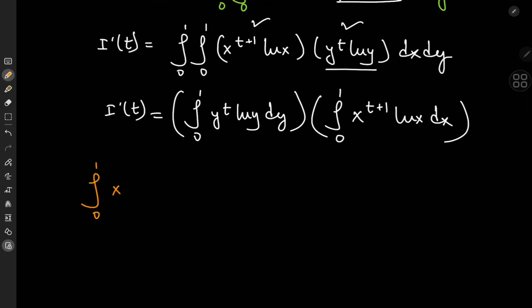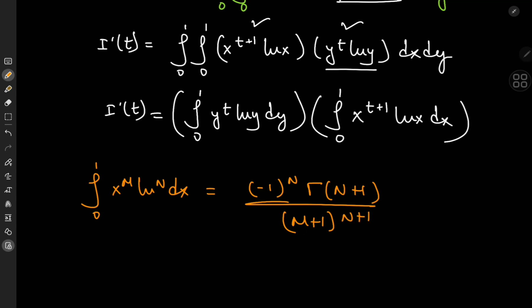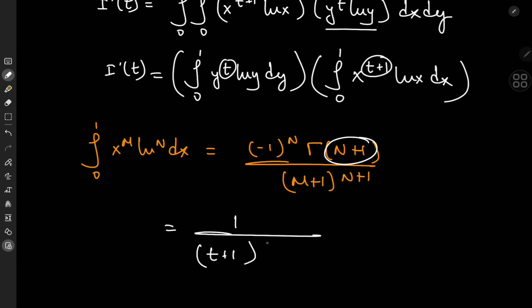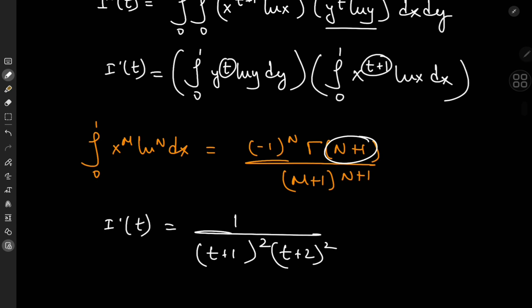I can evaluate both using the formula: the integral from 0 to 1 of x^m times log^n(x) dx equals (-1)^n times Γ(n+1) divided by (m+1)^(n+1). In both cases the logarithm is raised to the first power, so (-1)^1 times (-1)^1 gives positive 1, and Γ(2) equals 1. So the derivative of I with respect to t equals 1 divided by (t+1)^2 times (t+2)^2 — expressed fully in terms of the parameter t.